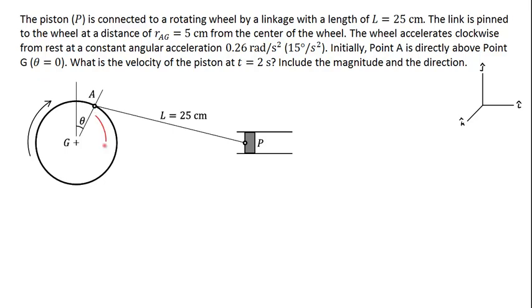In this problem we have a wheel that rotates clockwise and there's a connecting rod that joins points A and P. The point P, this piston, is constrained to move only in the horizontal direction. This connecting shaft is 25 centimeters long — a linkage with length of 25 centimeters. The link is pinned to the wheel and the distance between A and G, the radius of the wheel, is 5 centimeters.